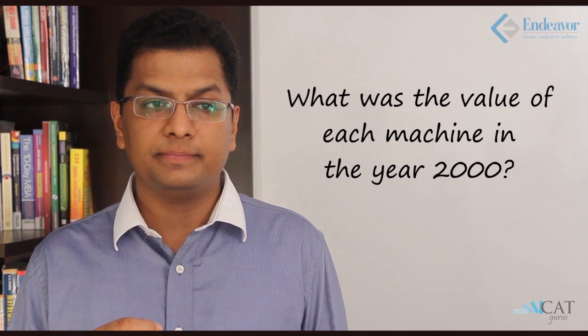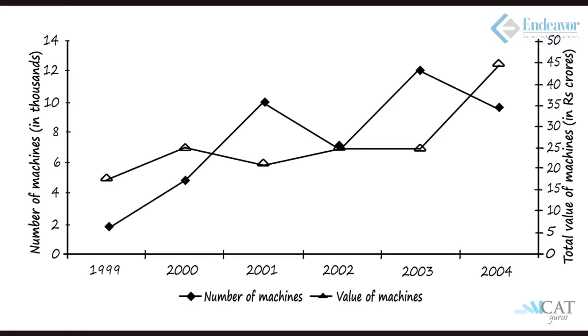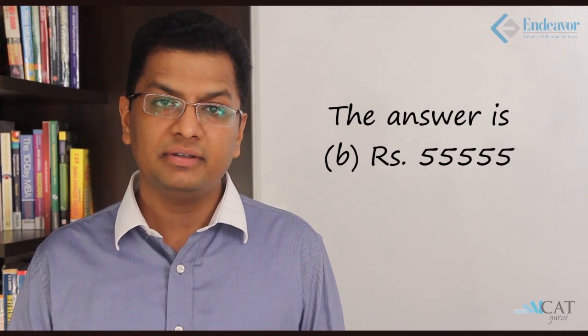The question: what was the value of each machine in the year 2000? Total value divided by total number gives value per machine. For number of machines in 2000, referring to the left axis, the gray block is slightly above 4, so approximately 4,500. For total value, referring to the right axis, it is around 25 crores. So 25 crores divided by 4,500 gives approximately 5,555 — the second option, which is the right answer.